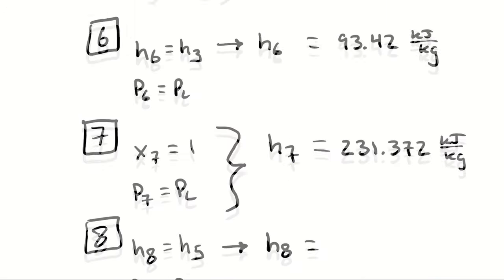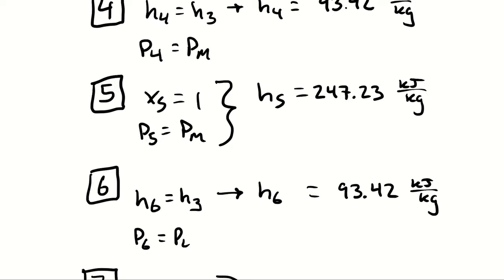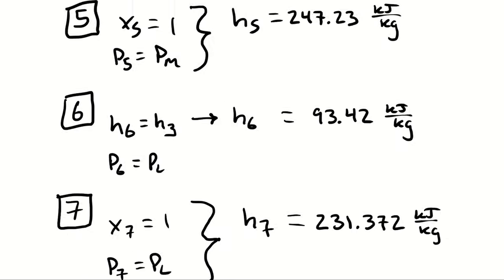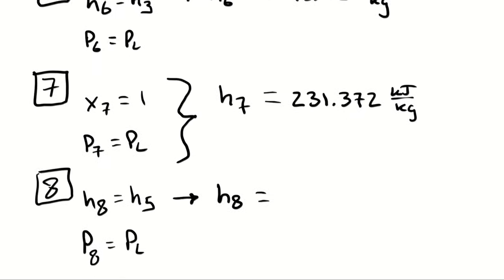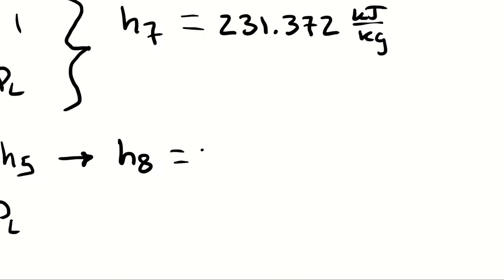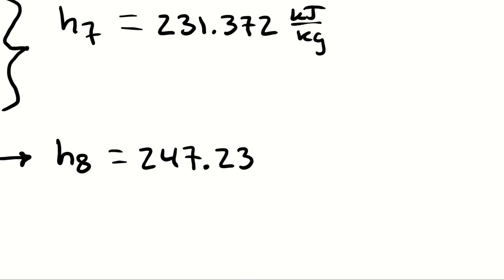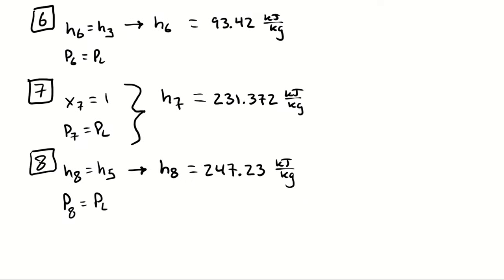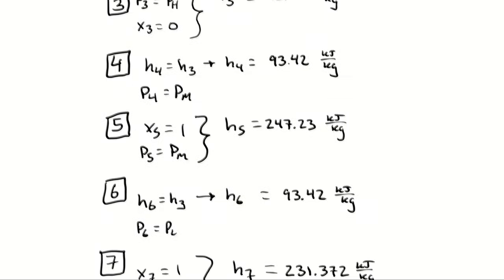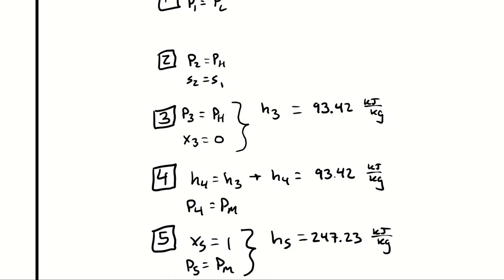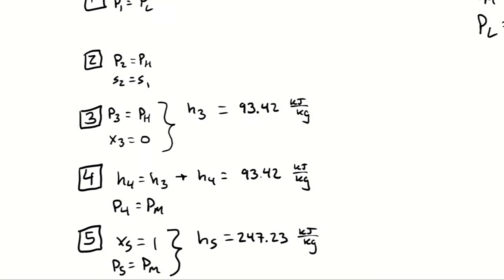At state 8, because the expansion from 5 to 8 is isenthalpic, h8 equals h5 = 247.23 kJ/kg. That gives me my first six enthalpies.